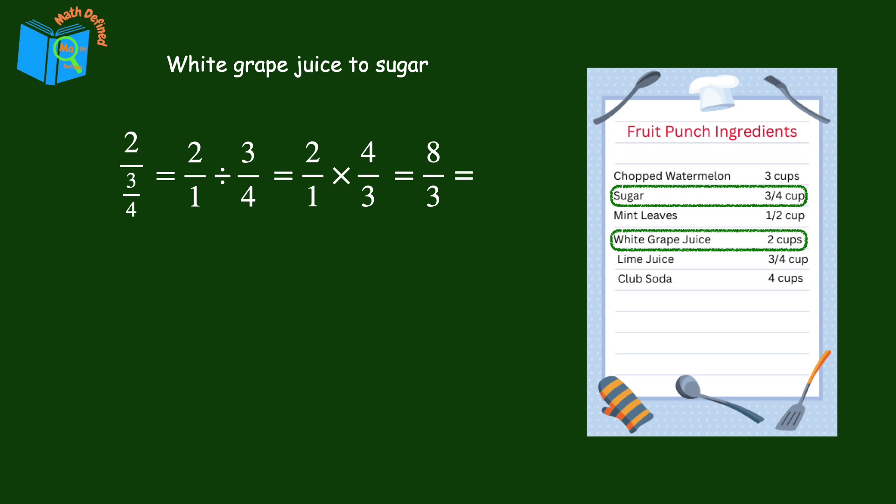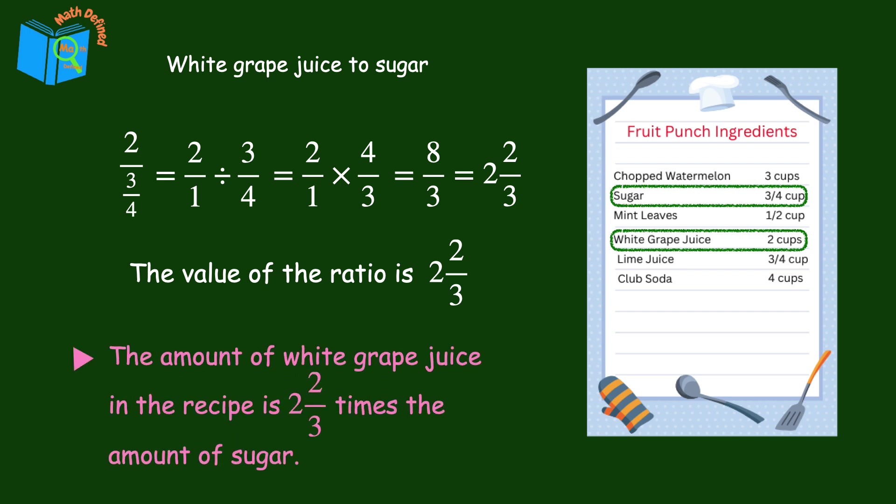The value of the ratio is two and two-thirds. So the amount of white grape juice in the recipe is two and two-thirds times the amount of sugar.